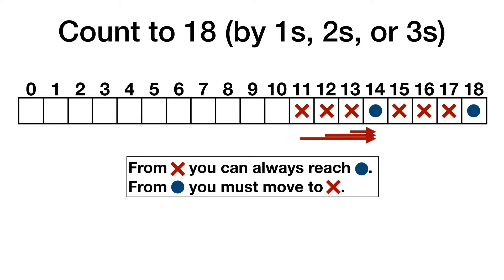11, 12, and 13 can get to 14, so they get a red X. 10, we have to move to a red X. 7, 8, and 9 can all reach a blue dot. 6 must move to a red X. 3, 4, and 5 can each reach a blue dot at 6, so they get red X's. And the 2 gets a blue dot, and that means 0 and 1 get a red X.